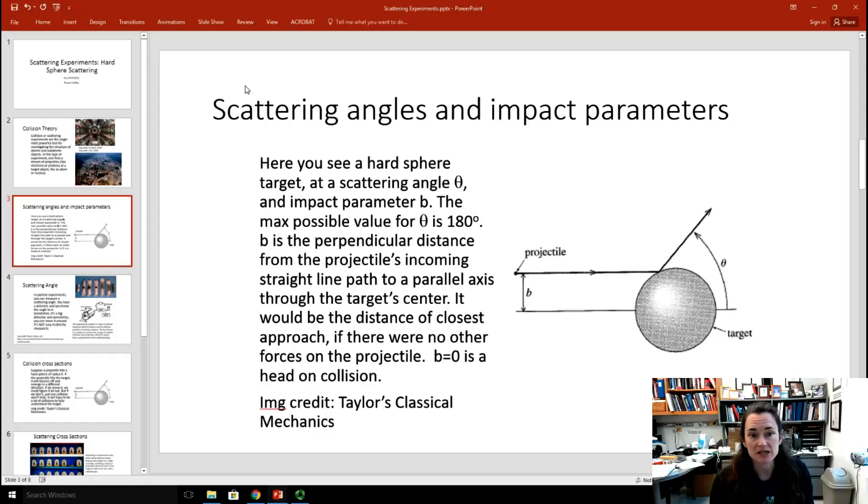Looking at the angle theta, the maximum possible value for theta is 180 degrees. And, of course, the minimum possible angle would be zero if the particle didn't even touch the target at all.